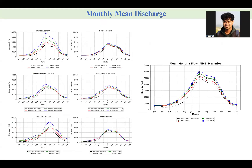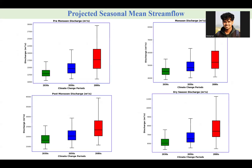Here are the results. Monthly mean discharge hydrographs are shown for six climate scenarios and also for the multi-model ensemble. The peak discharge is noticed under the wettest and warmest scenarios for the 2080s period. The seasonal mean streamflow — pre-monsoon, monsoon, post-monsoon, and dry — all intensify by the 2080s period, with increased median range and spread especially in the monsoon season.